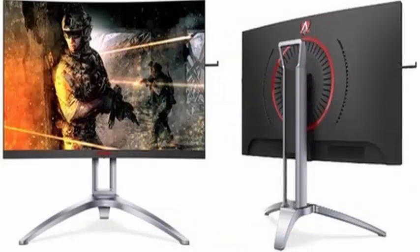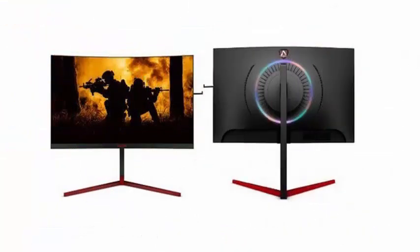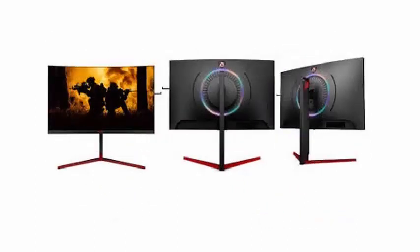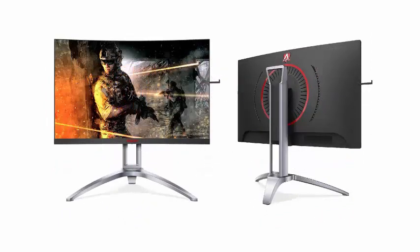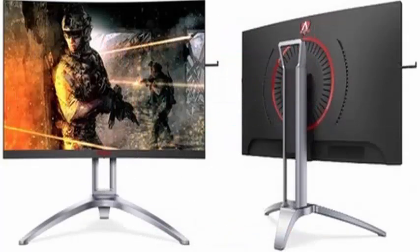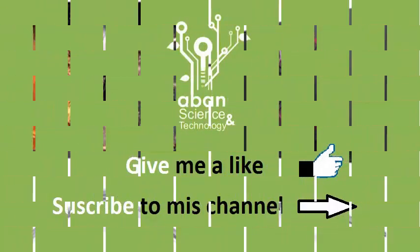The AOC AG273QCX, unlike the previous model, features a 27-inch VA curved 1800R panel. It offers the same QHD resolution of 2560x1440 pixels, but with a response time of 4 ms, a maximum brightness of 400 candelas per m², and a refresh rate of 144 Hz. It also provides coverage of the DCI-P3 color space at 90%, uses AMD Radeon FreeSync, and is compatible with the DisplayHDR400 standard.